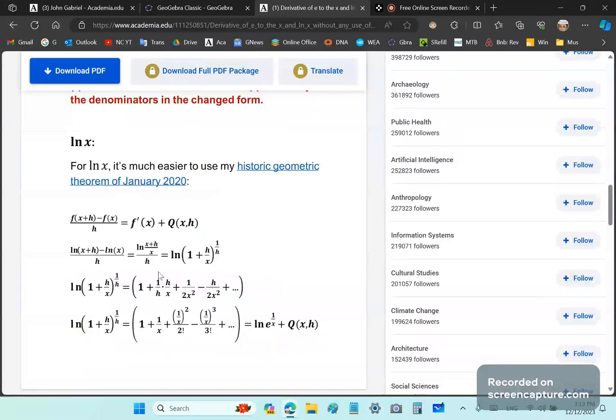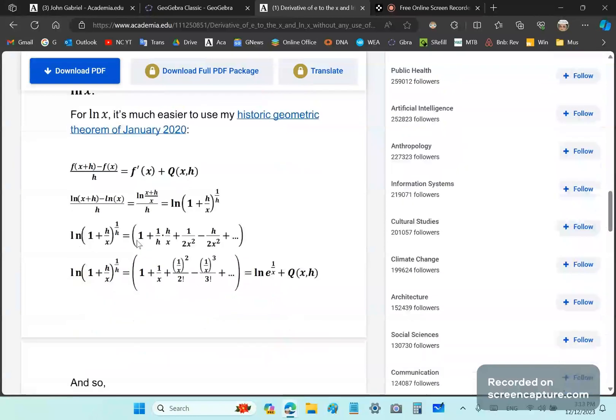Using the historic geometric theorem, this is how you can actually find the derivative. Follow these steps carefully: simplifying again, cancelling out the h's, and of course remembering that any expression with all the h's in this step will be this difference term. And the rest will, as you see, simply be the log of e^(1/x).